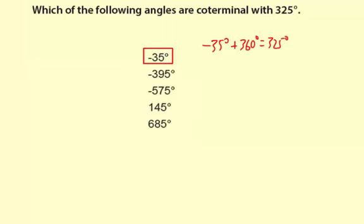Now when I'm comparing the 325 and the negative 395, well actually I'm just going to compare with the negative 35, because negative 35 degrees minus 360 degrees is negative 395 degrees. So that means the negative 395 degrees is also coterminal with the 325 degrees because it's coterminal with the negative 35 degrees.